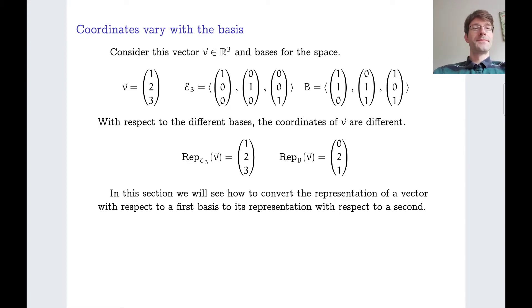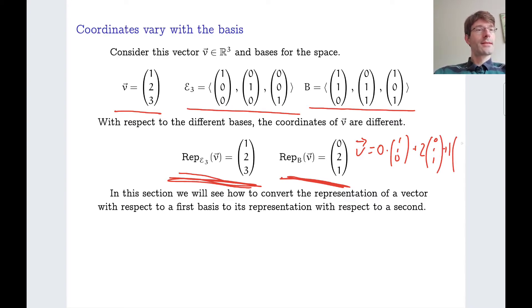Example, R3. Here's a random vector from R3. We take the standard basis and this basis. Now, representing the vector V with respect to the standard basis gives us the vector V itself, because it's a standard basis. And with respect to B, we have a different representation. Let's check it. We should be able to write V with respect to the basis B by zero times the first basis vector plus two times the second one plus one times the third one. And I think that checks out. So in this section or in this talk, we are going to look at how we go from this representation to this representation.